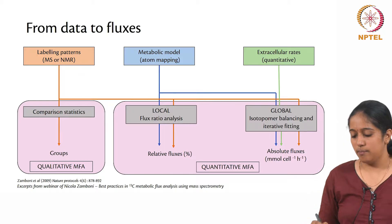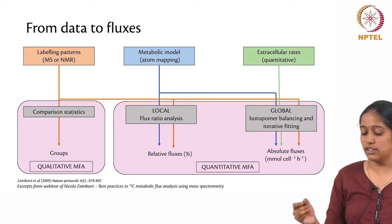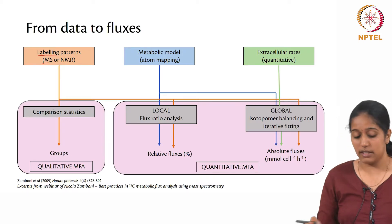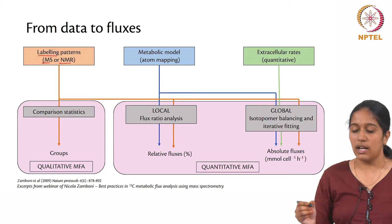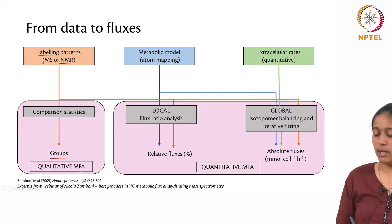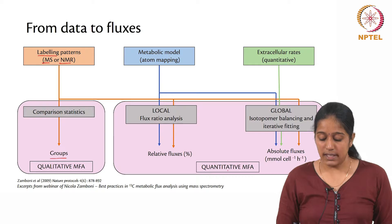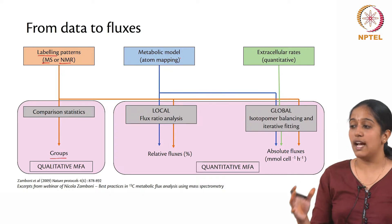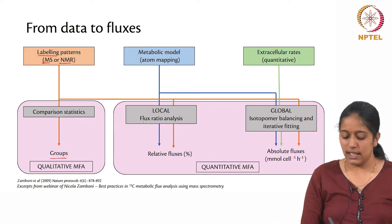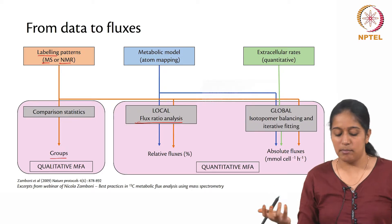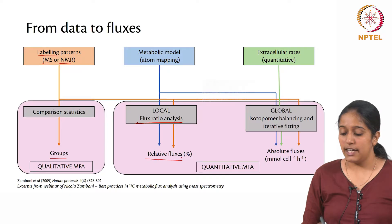This is the general overall outline of how to calculate the fluxes from the data. You have the labeling patterns — which can come from gas chromatography mass spectrometry or other techniques like NMR — and with these labeling patterns you can identify them into groups. This is called qualitative metabolic flux analysis. There is also quantitative metabolic flux analysis, where you have a metabolic model with known atom transitions and you calculate the flux ratio of which pathway has given rise to which labeling, finding the relative fluxes.